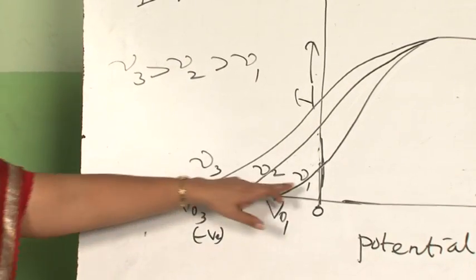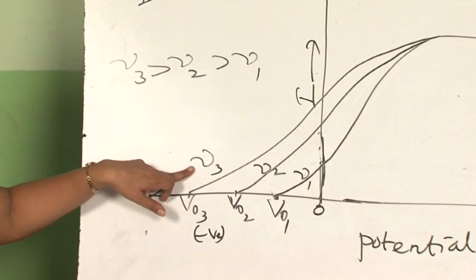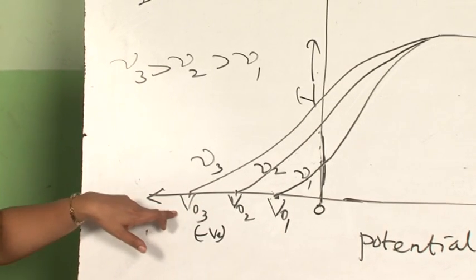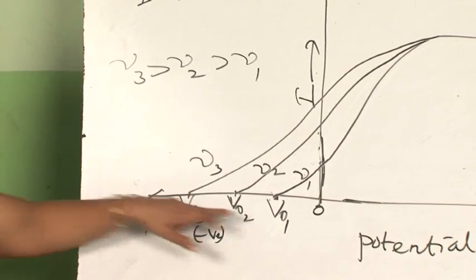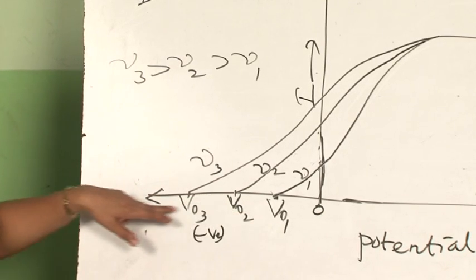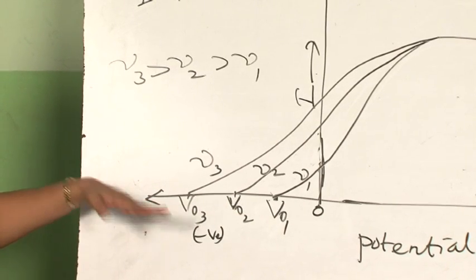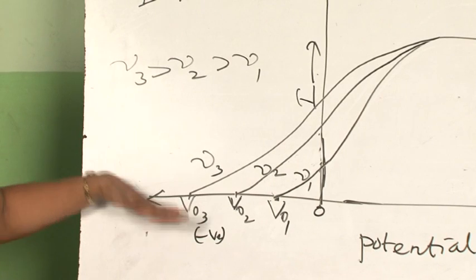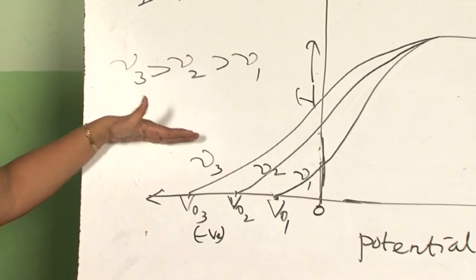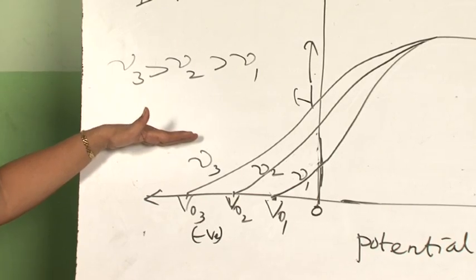This shows that as you increase the frequency of incident radiation, the stopping potential is also increasing. The negative value of stopping potential is getting increased, clearly showing that the stopping potential depends only on the frequency but not on the intensity.